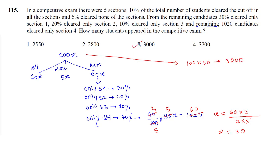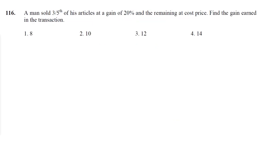This is how we can solve question number 115. Let's have a look at question number 116. A man sold 3/5 of his articles at a gain of 20% and the remaining at cost price. Find the gain earned in this transaction.